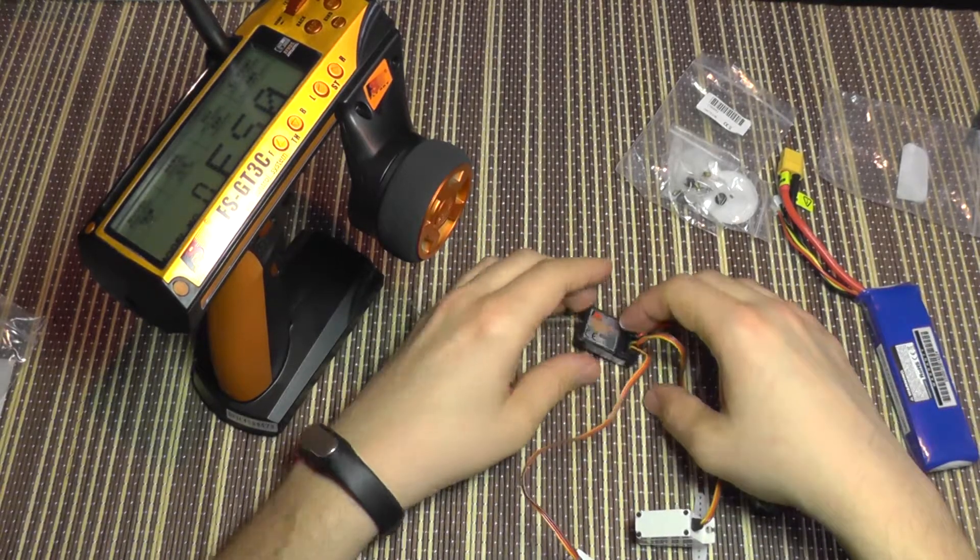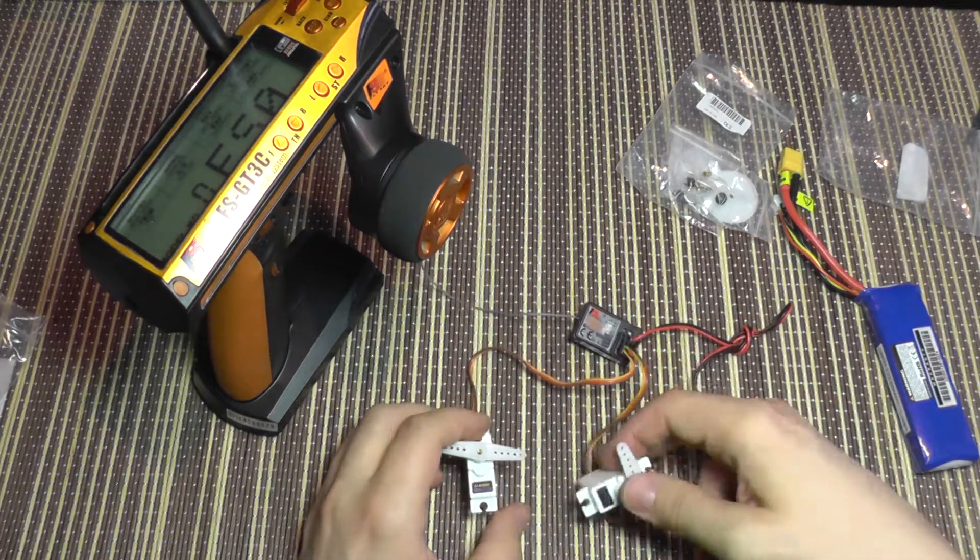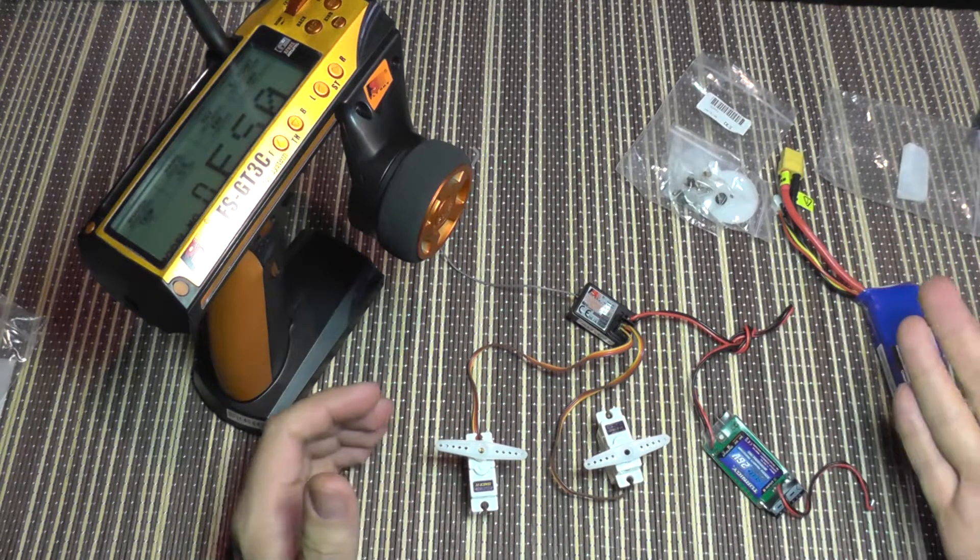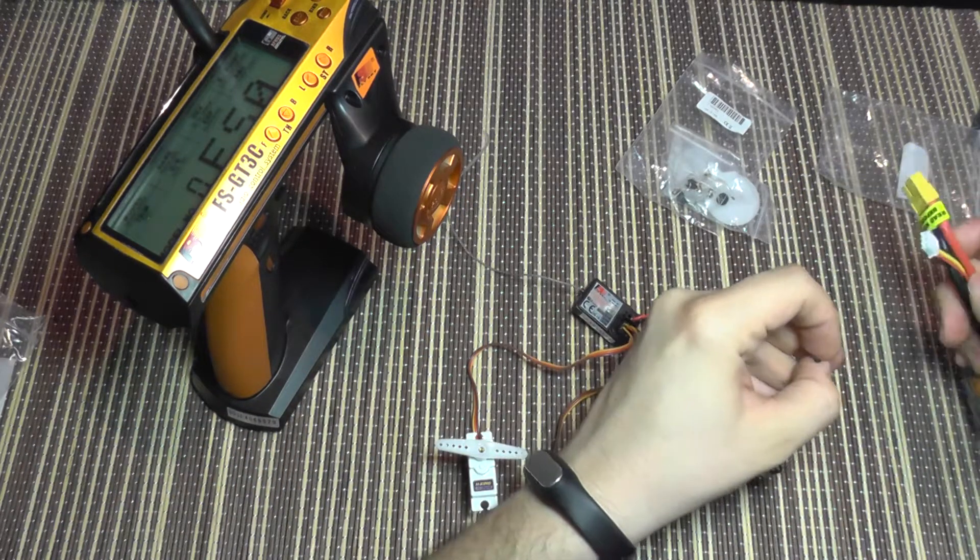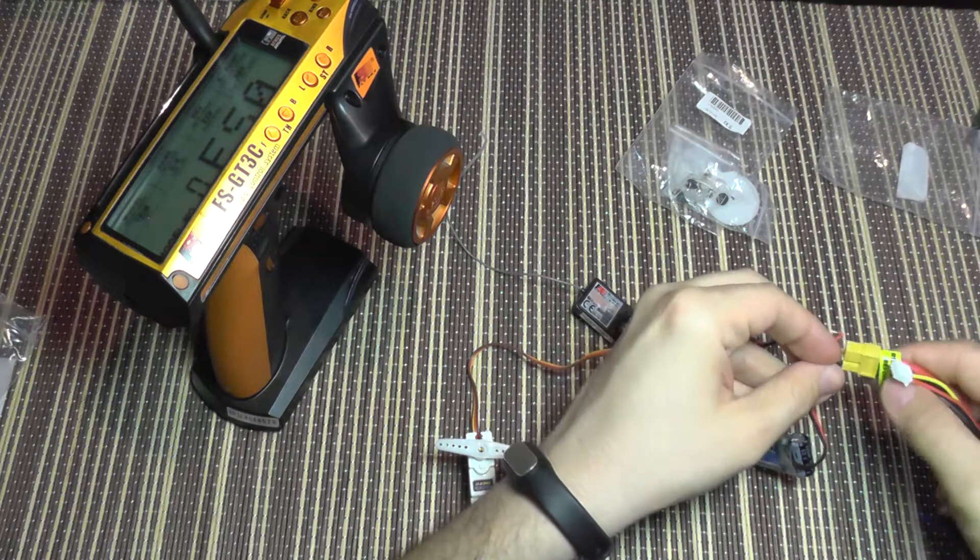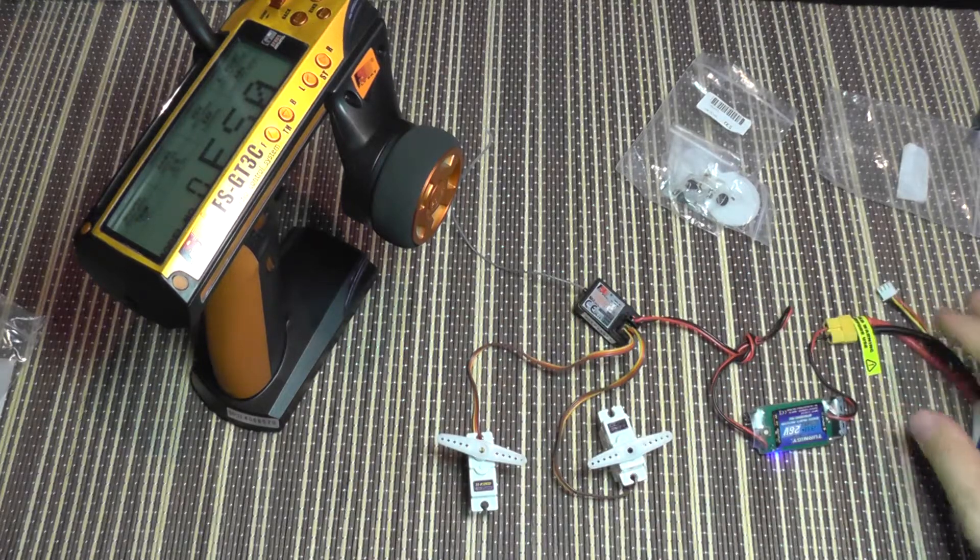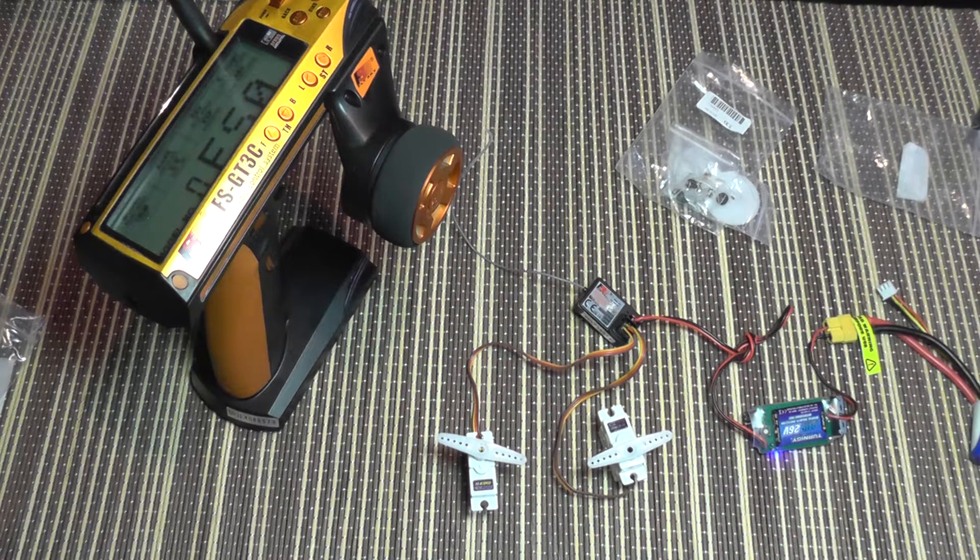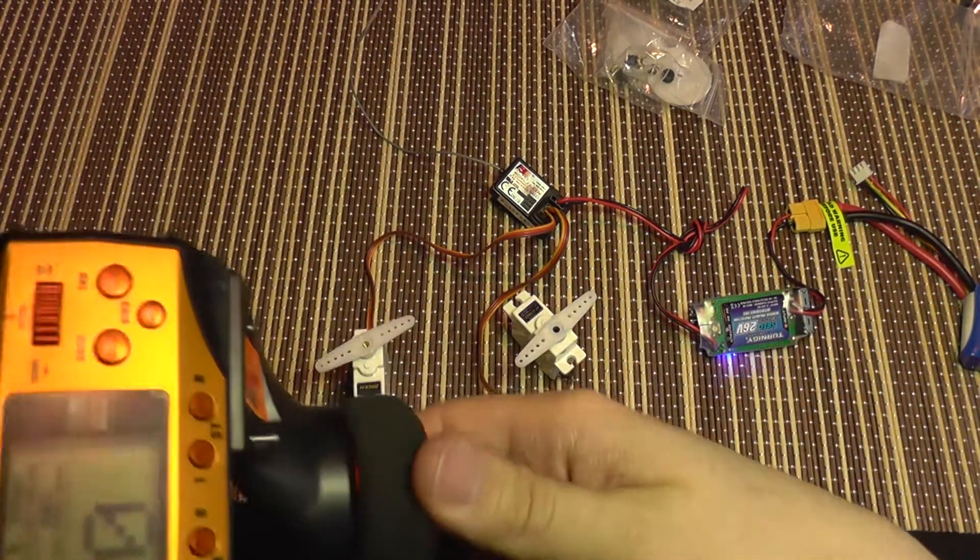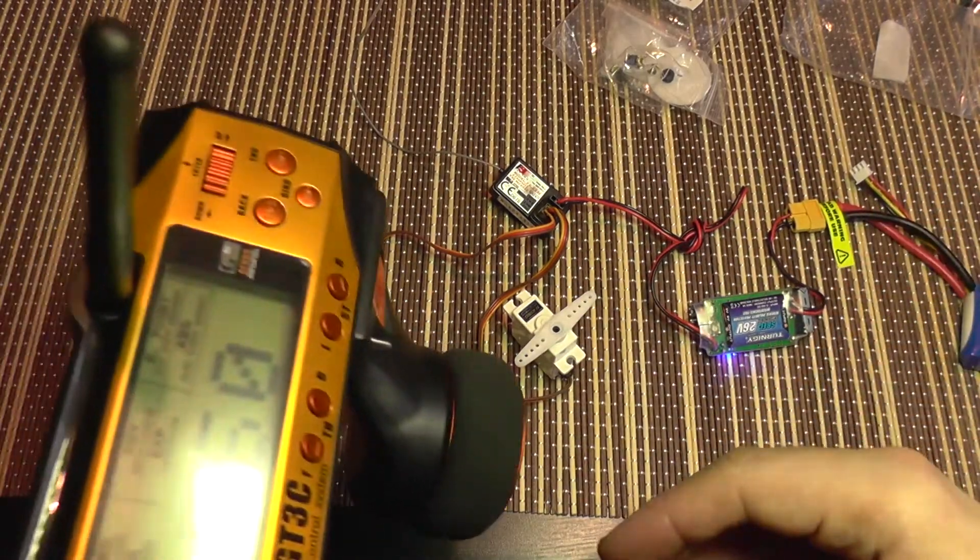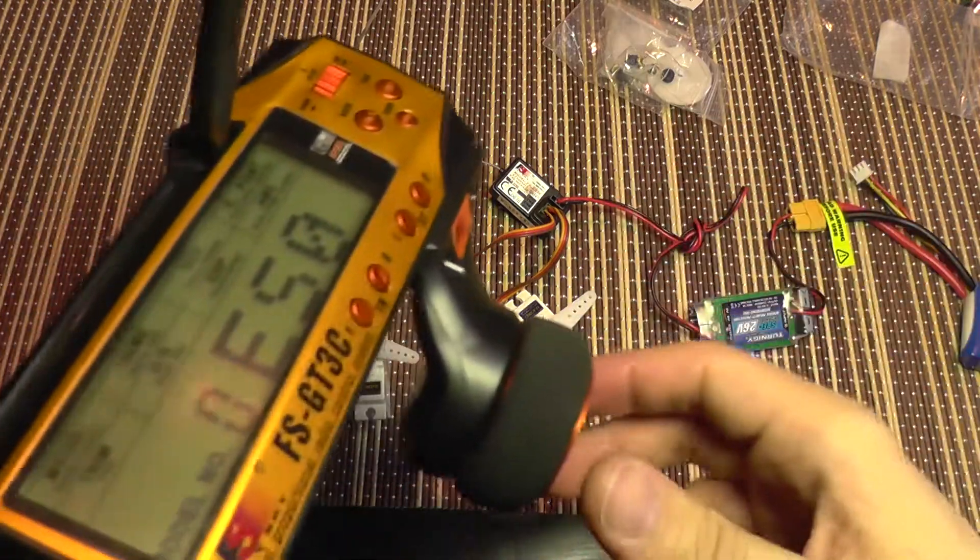Flysky advertises that this receiver is already bound with the transmitter from the factory. So I'm not going to try to bind it. I'm just going to power it on and see if it's going to work or not. And I'm going to connect this to the LiPo battery. Let's zoom in a bit. This should be better. And what do you know, it works out of the box. No binding. I didn't even restart the transmitter. I just connected power to the receiver.